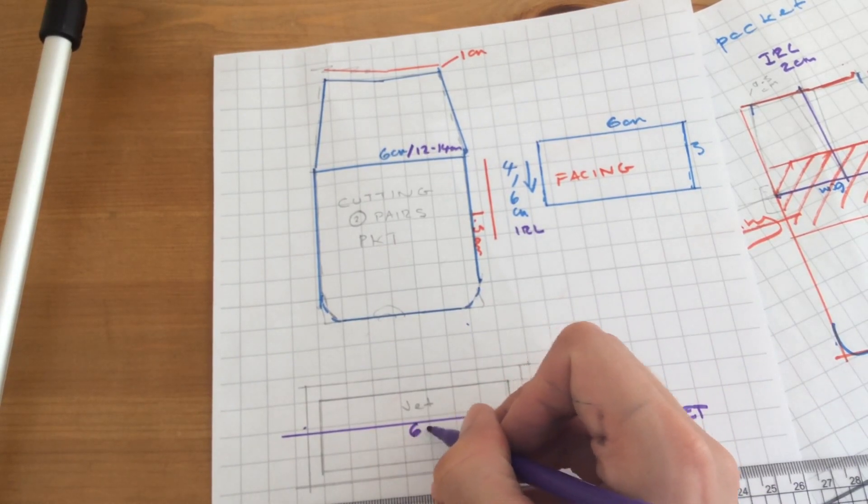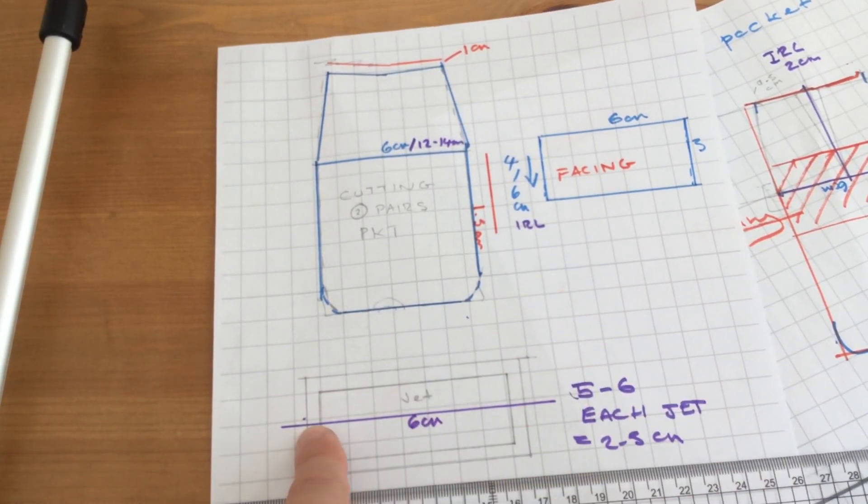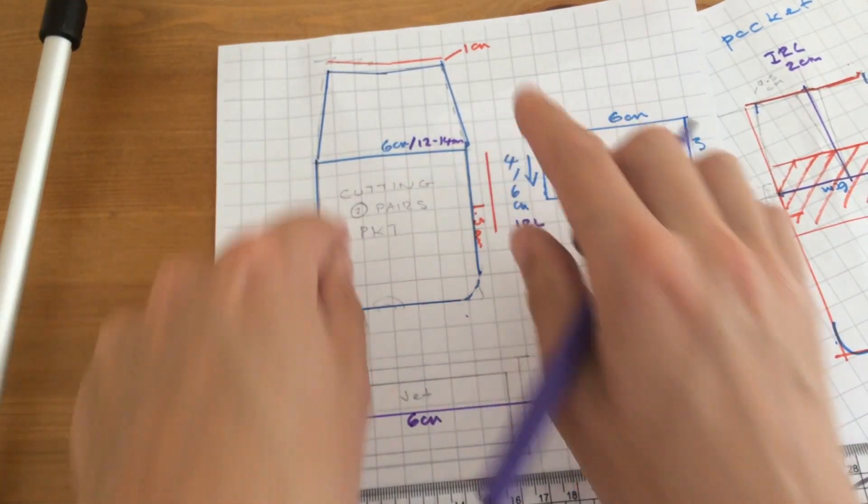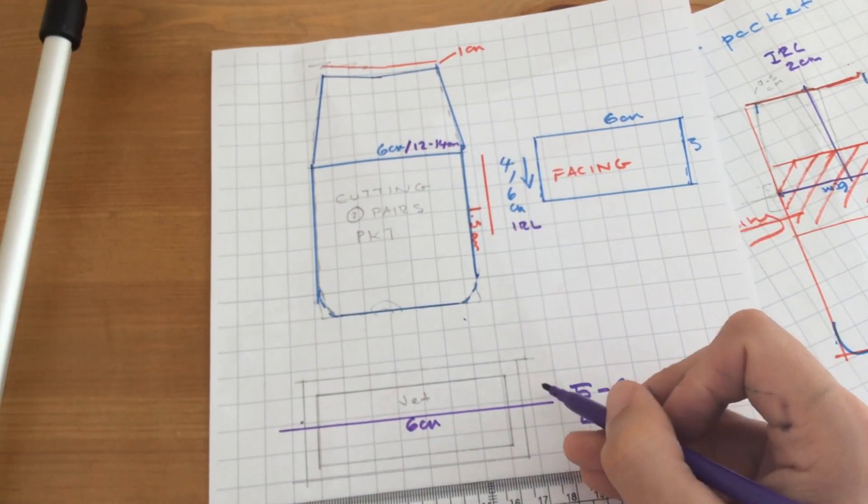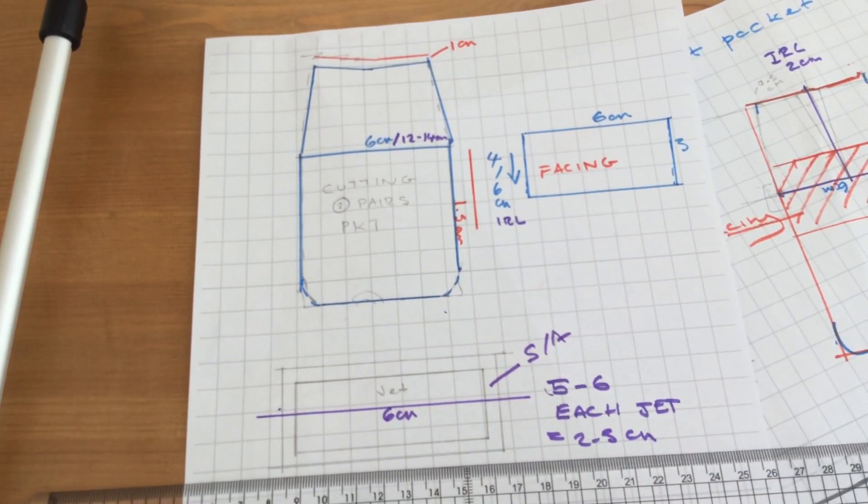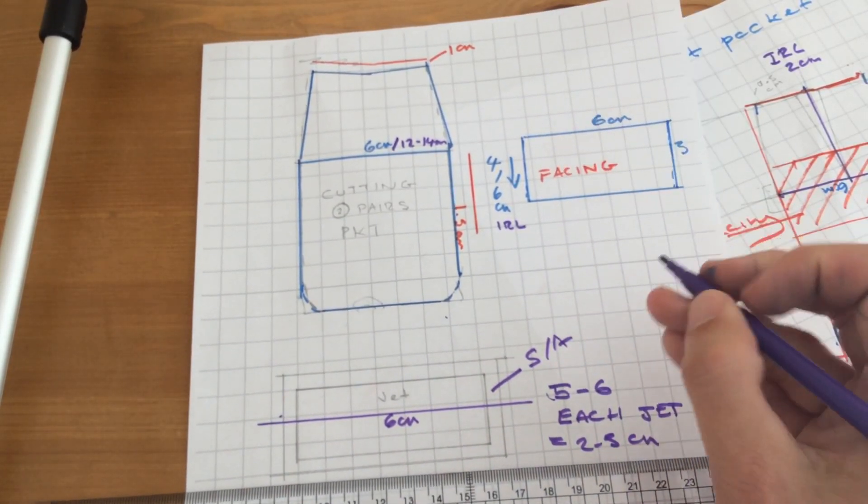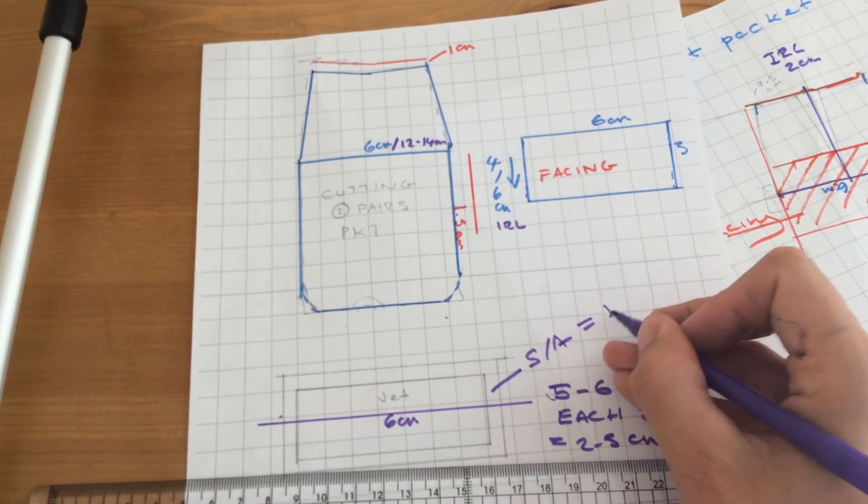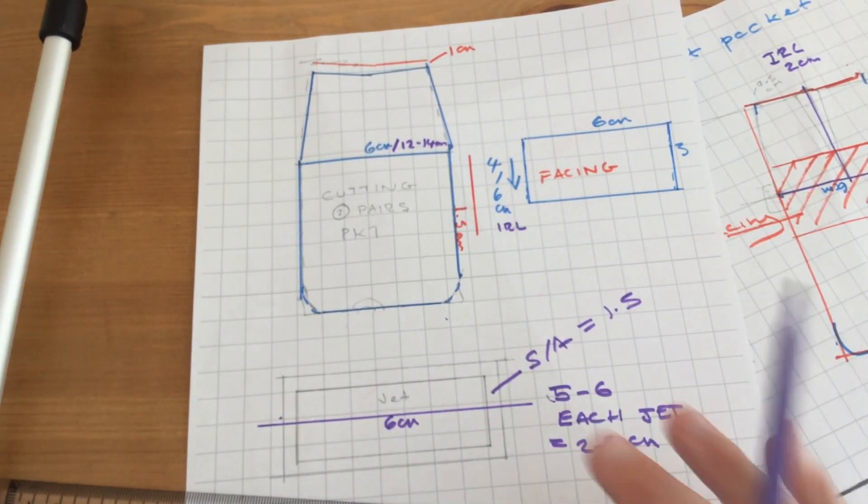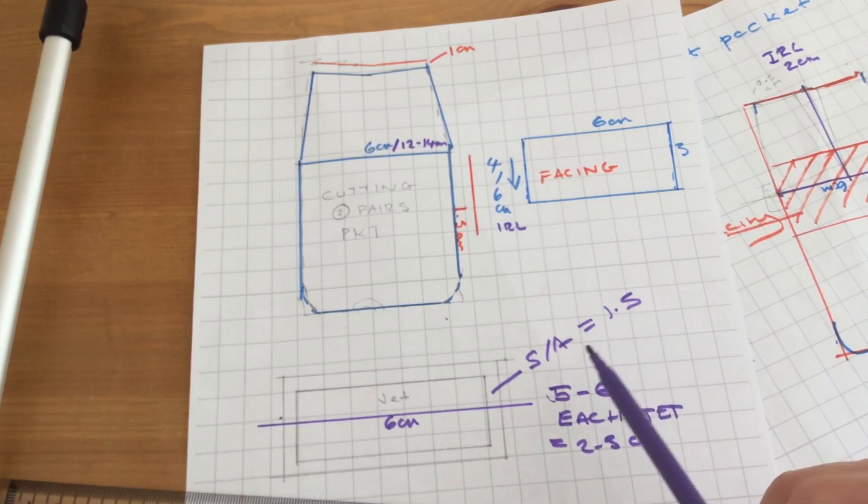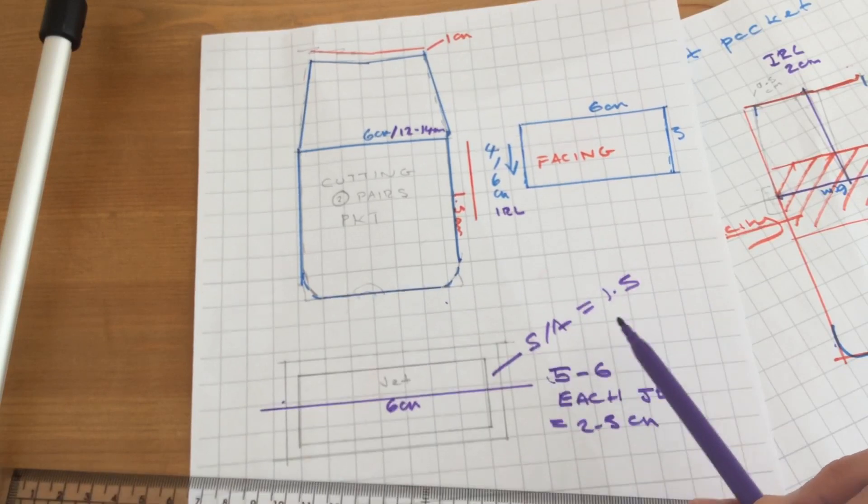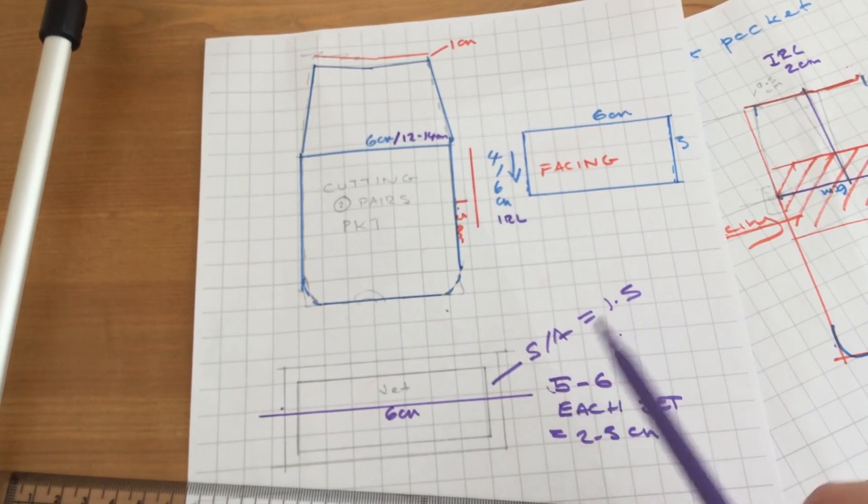So this measurement here is 6 from here to here, matching there. So on the ends the seam allowance in real scale—purple for real scale—would be about 1.5 again, similar to that. In manufacturing it's 1 centimeter. When we are making our own stuff, we tend to put 1.5 on because it's better for the pressing and the sewing.